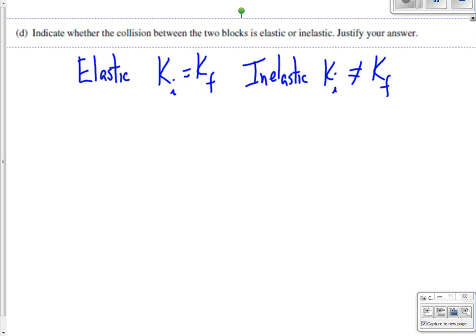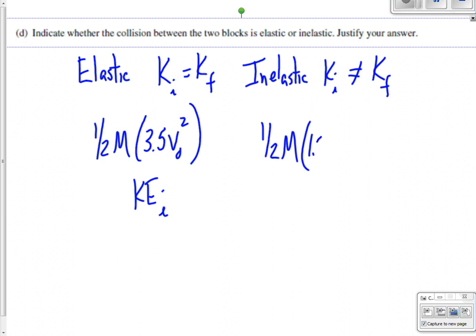So if we remember back, our first block had a speed of 3.5 squared. The second block was at rest. So that constitutes the total kinetic energy before. And the kinetic energy after we had one half m 1.5 v initial squared plus 2 m v initial squared. Probably need to work this out a little bit more.